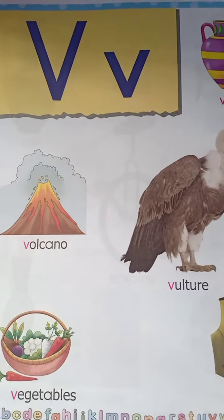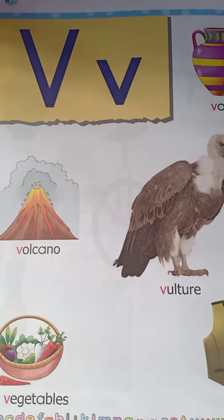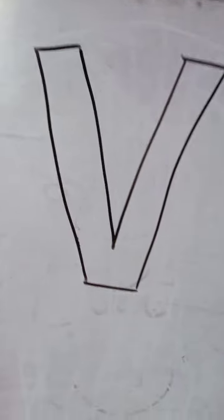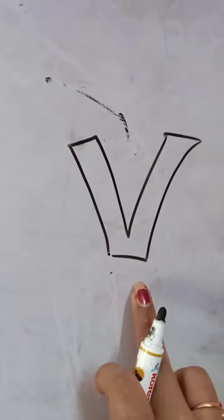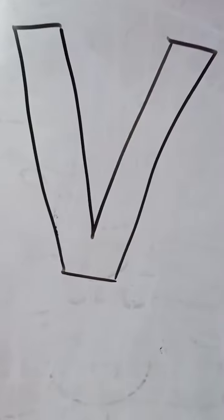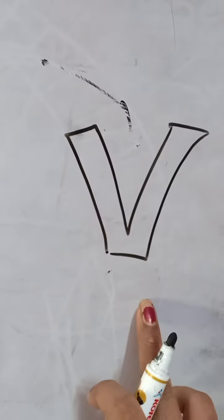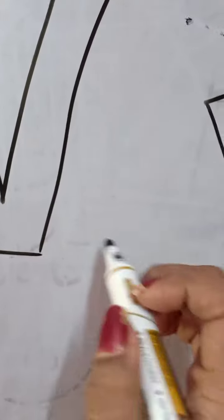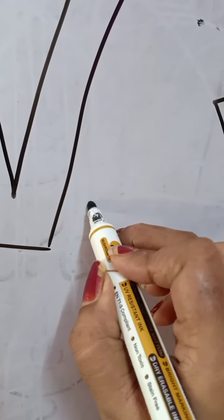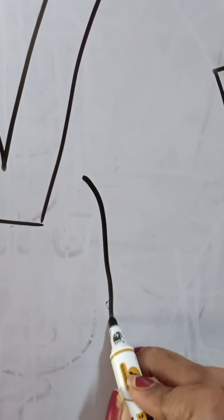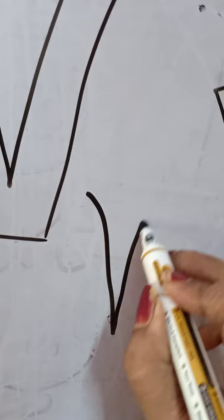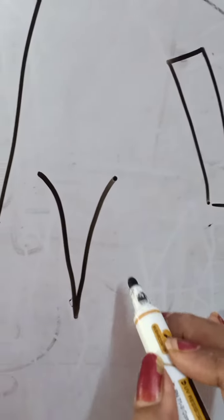Here is the capital V and here is the small V. This is the 3D of capital V. This is the 3D of small V. How to write the capital V? This is the capital V. Small V — exactly.